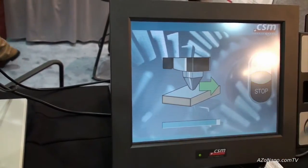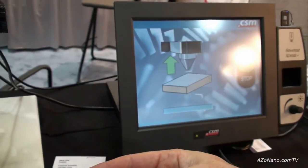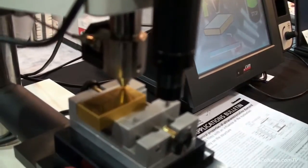So the scratch is just completing now. Once the scratch is complete we're going to unload the indenter and the sample will then move under the optical microscope which is integrated into the system.